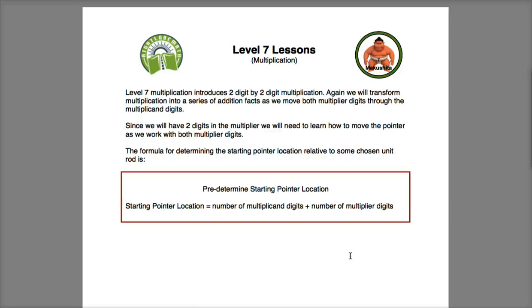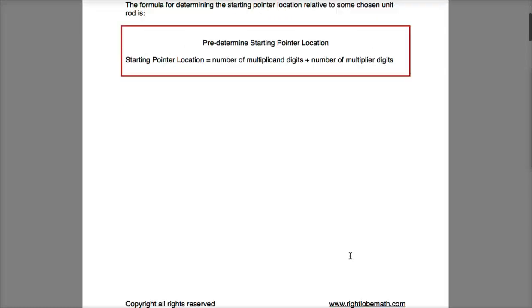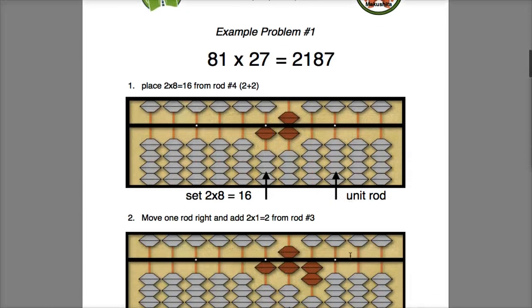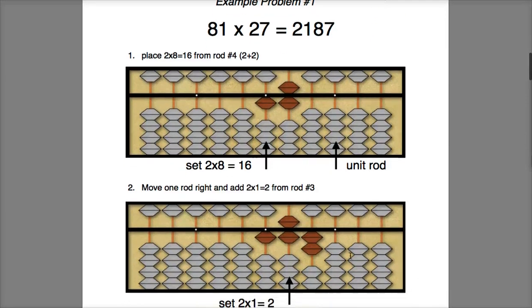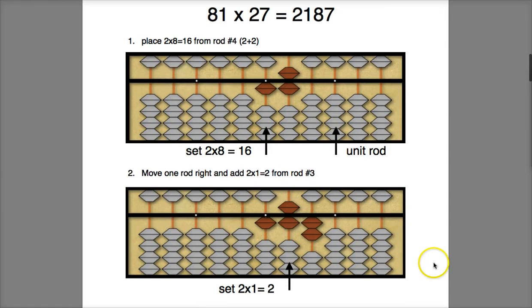As in Level 8, we will need to calculate our starting pointer location. We simply do that by adding the number of multiplicand digits plus the number of multiplier digits. So let's go ahead and jump into a first problem here.